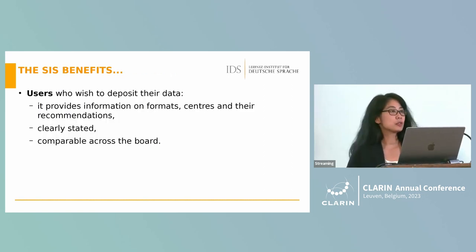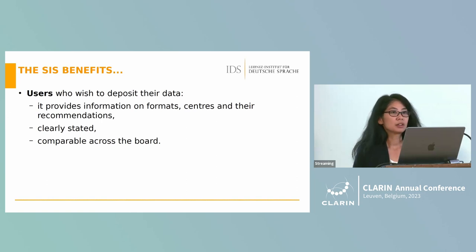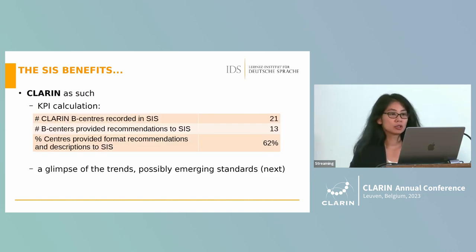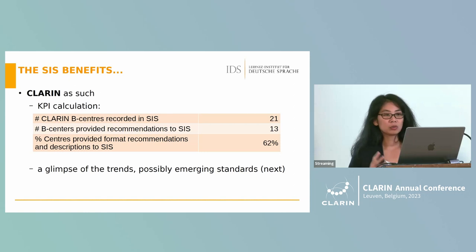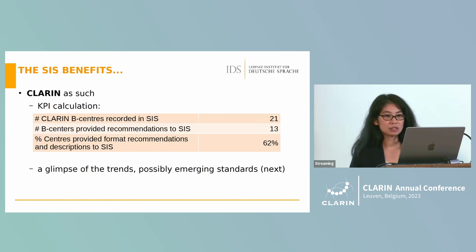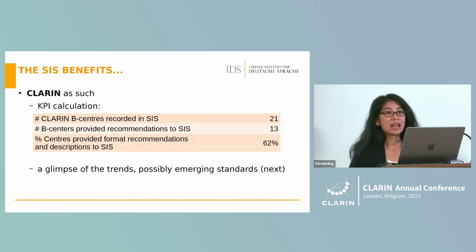The benefits of SIS for users who wish to deposit their data: it provides information on partner centers with recommendations that are clearly stated and comparable across centers, because we have one common skeleton that makes it comparable. For CLARIN, it enables KPI calculations. There are 21 CLARIN B centers recorded in the SIS, and 13 of them have provided recommendations. That represents 62 percent of centers that have provided recommendations and descriptions of formats, giving an interesting glimpse of possible emerging standards.